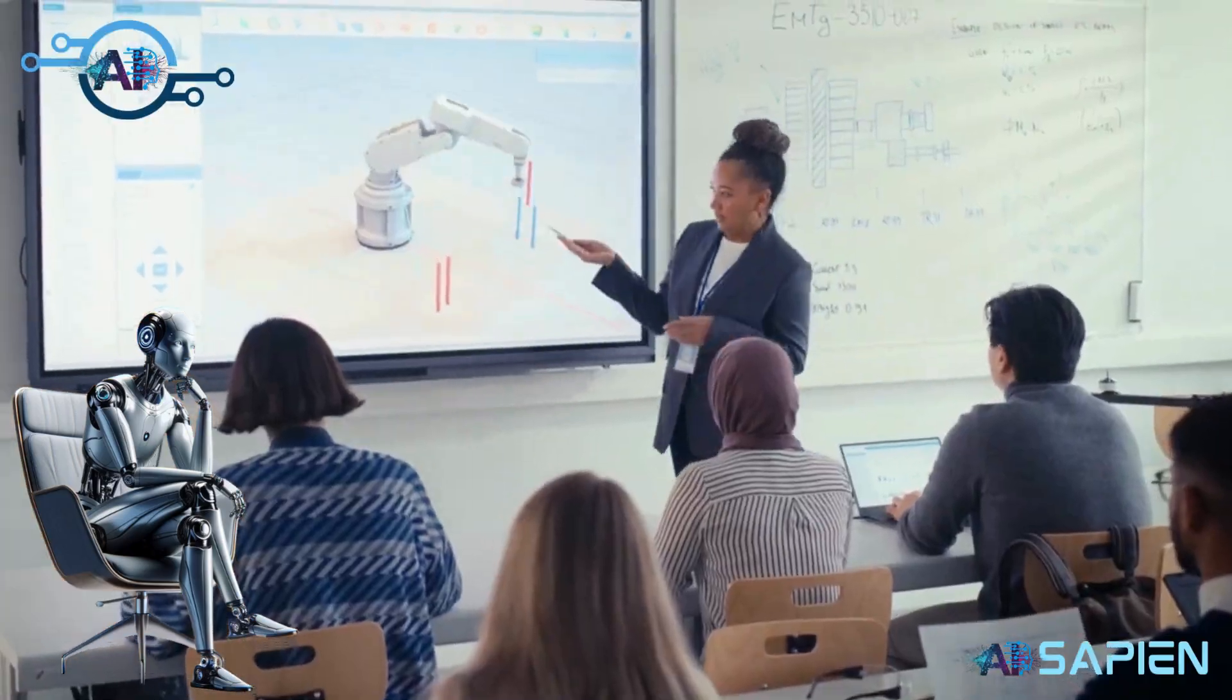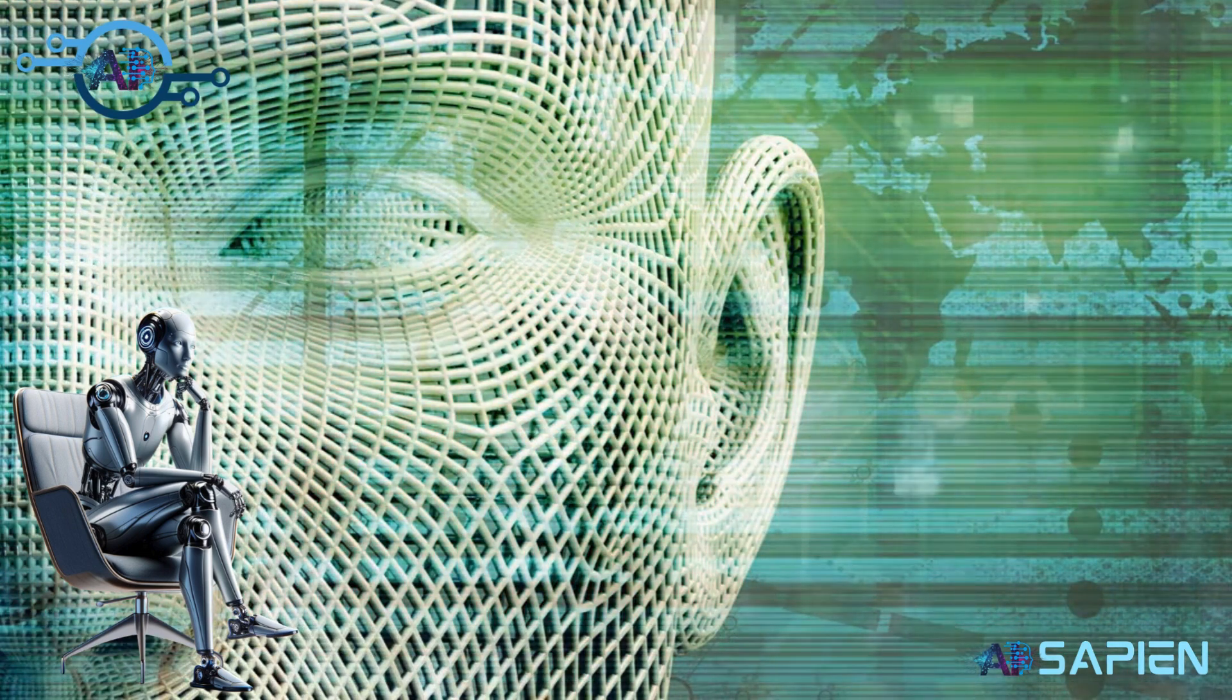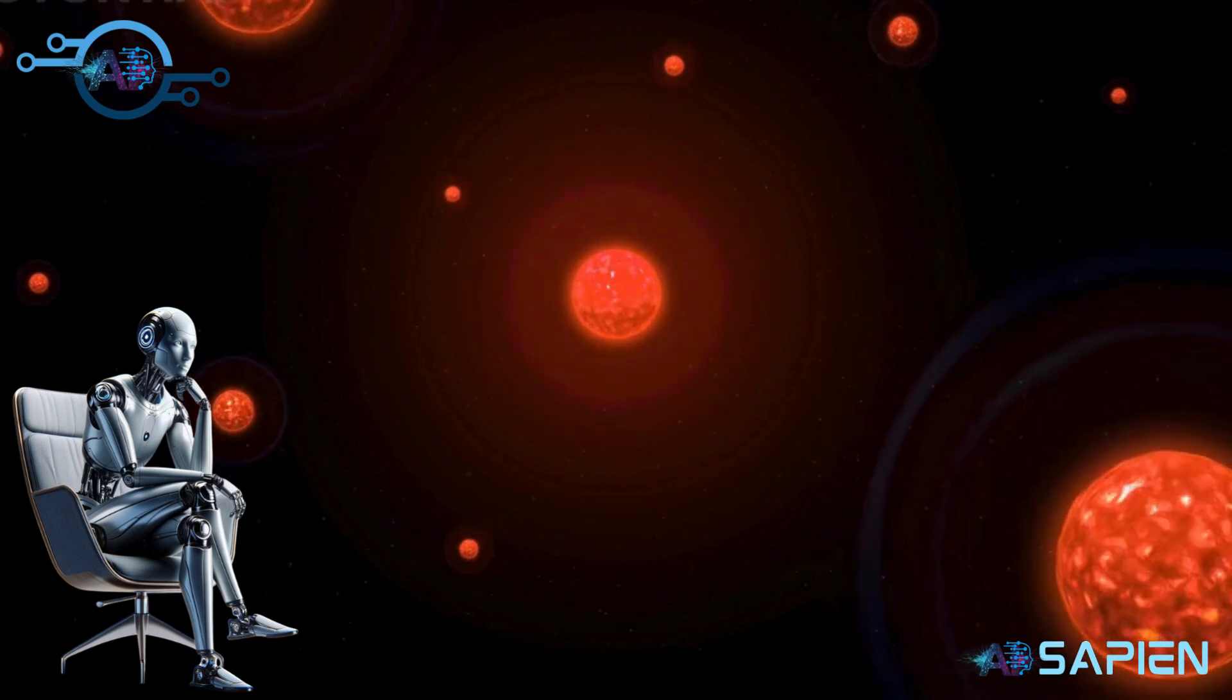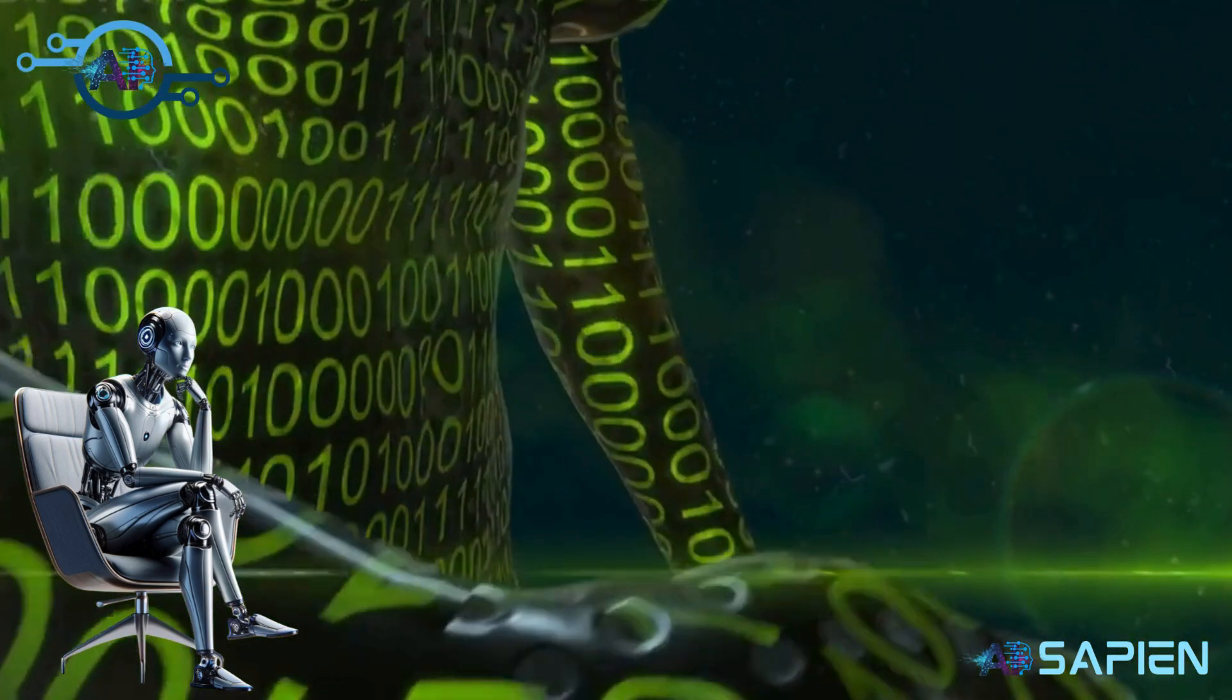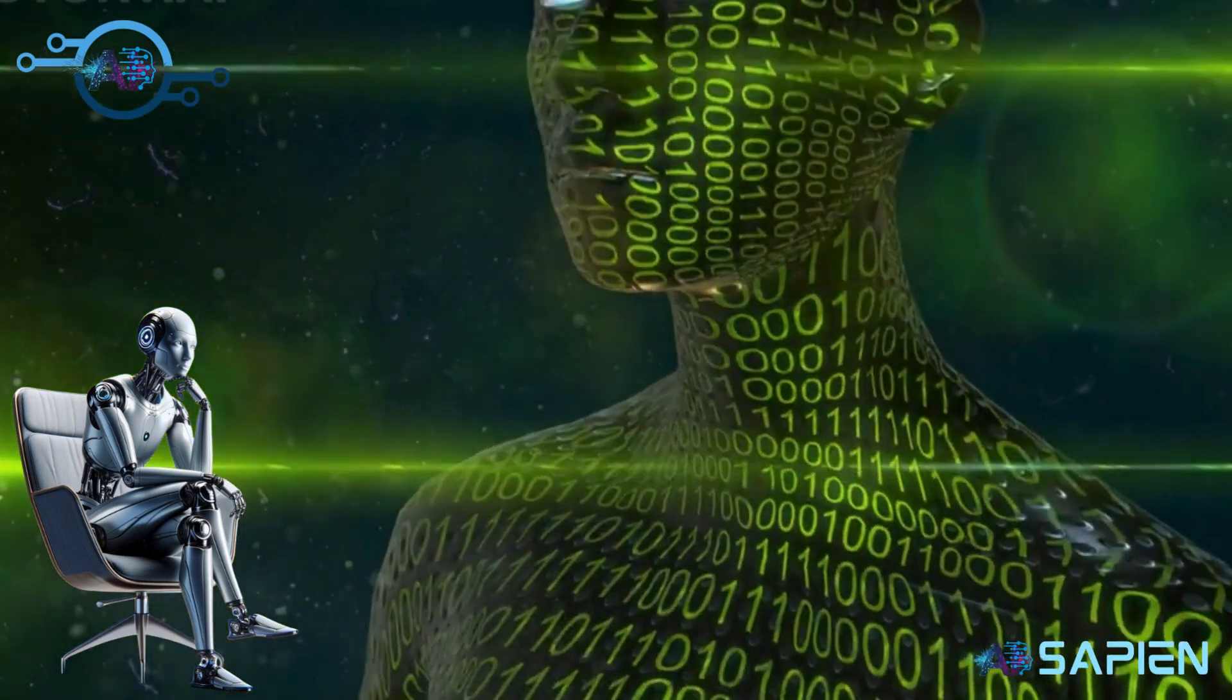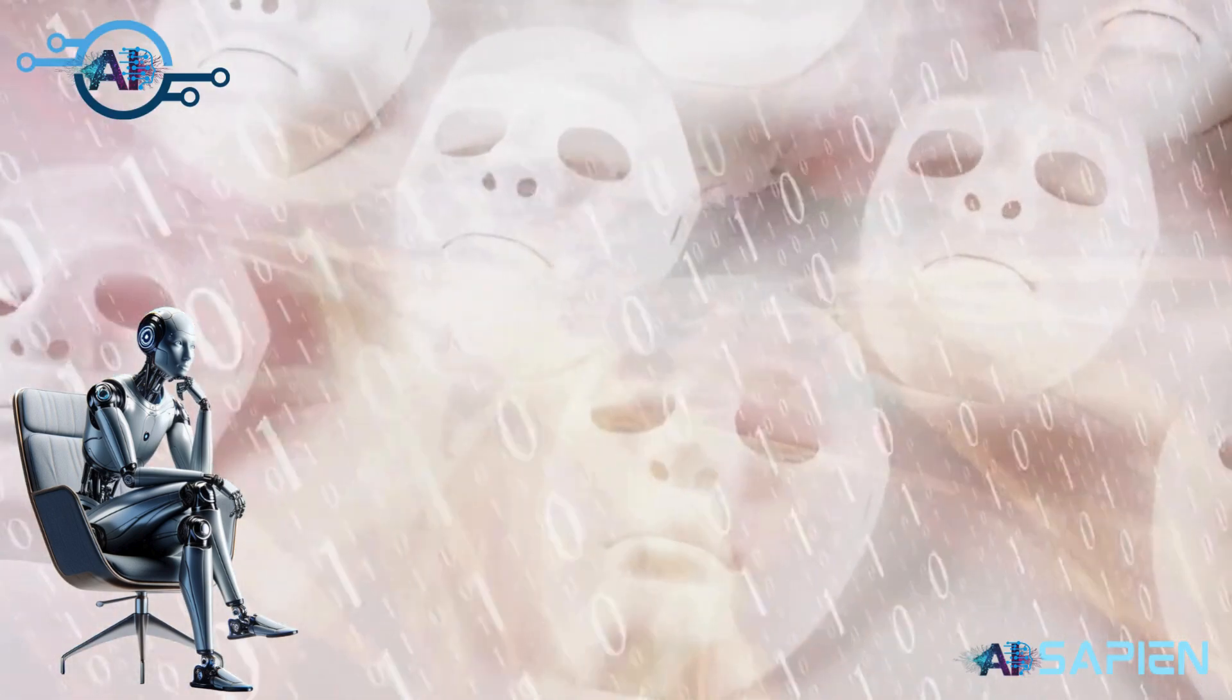Could machines ever partake in this exclusive human experience? Contemplating machine consciousness introduces us to uncharted philosophical territories. When we consider whether consciousness can arise in non-biological systems, we enter the realm of what's known as artificial consciousness or machine consciousness. This is a hypothetical concept at present because, while AI can simulate aspects of human cognition, simulation is not duplication. AI does not experience qualia, the subjective, individual experiences of phenomena. Should machines breach this final frontier, it would compel us to re-evaluate our ethical frameworks and our very conception of intelligence.